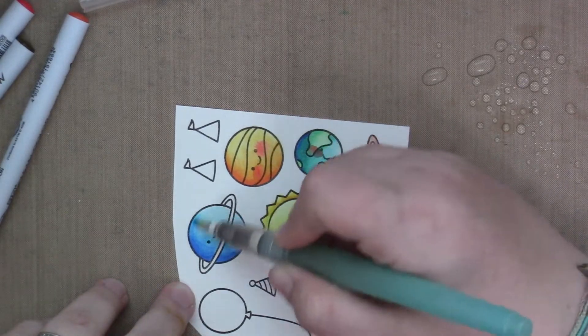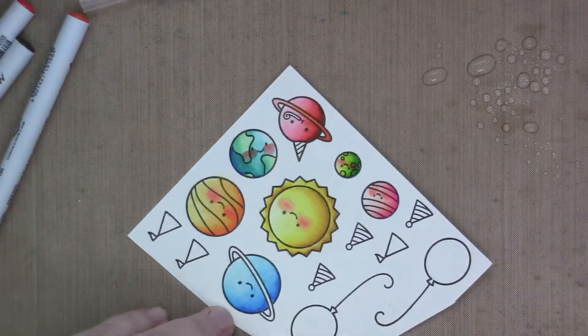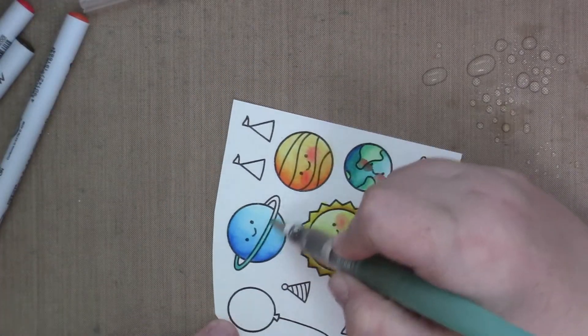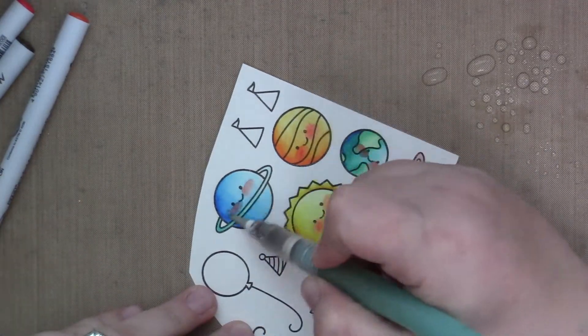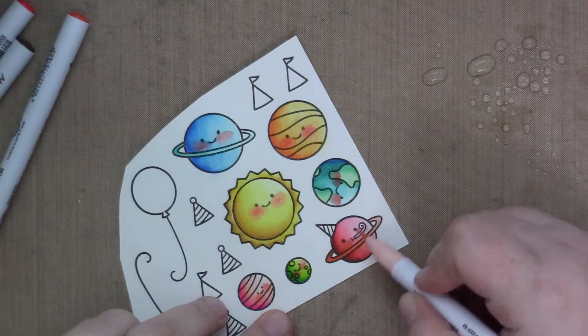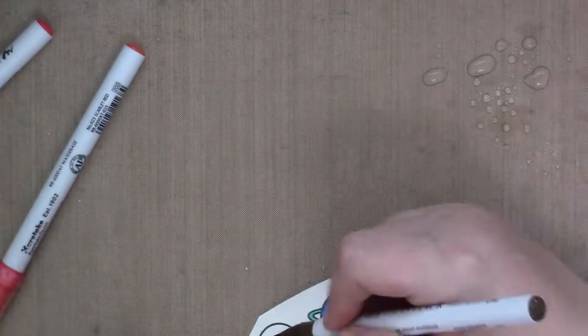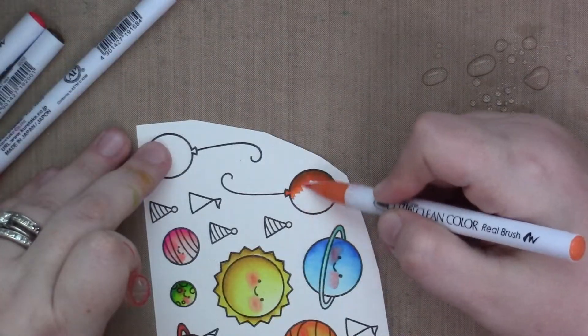Anyway, I usually, when I color in my images, when I'm using my water brush to blend in the colors, I do it in a circular motion. Because that gets rid of any streaks. So it makes it a little bit more watercolor-y.